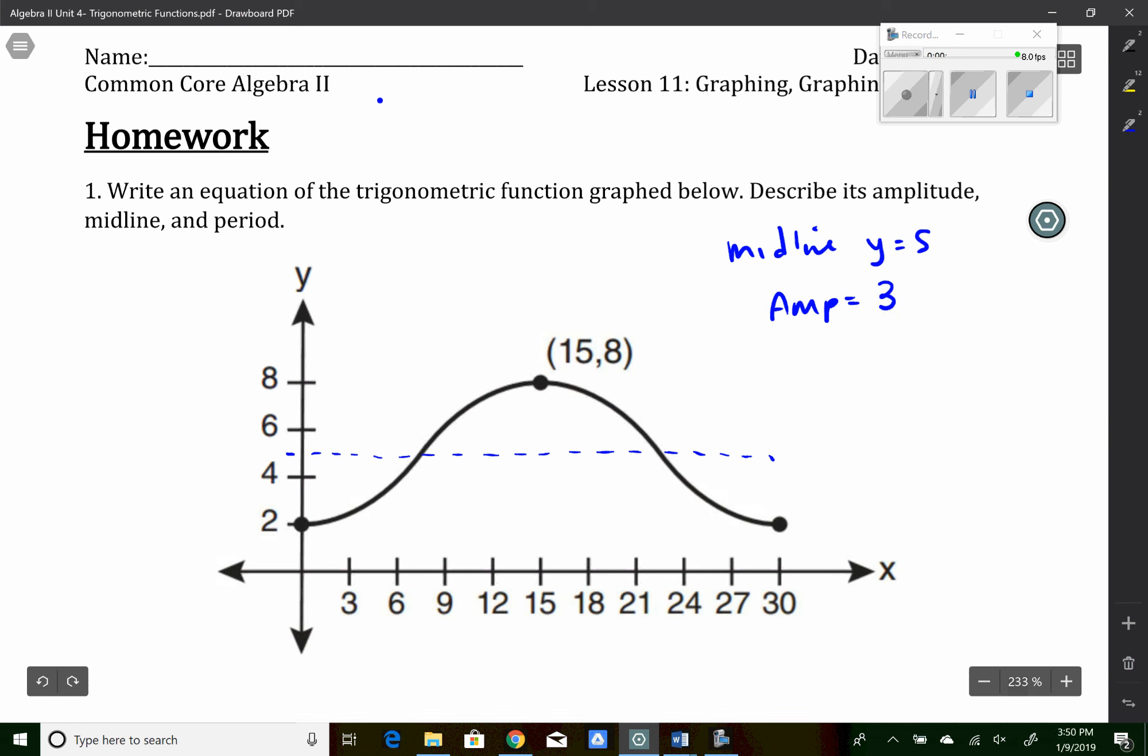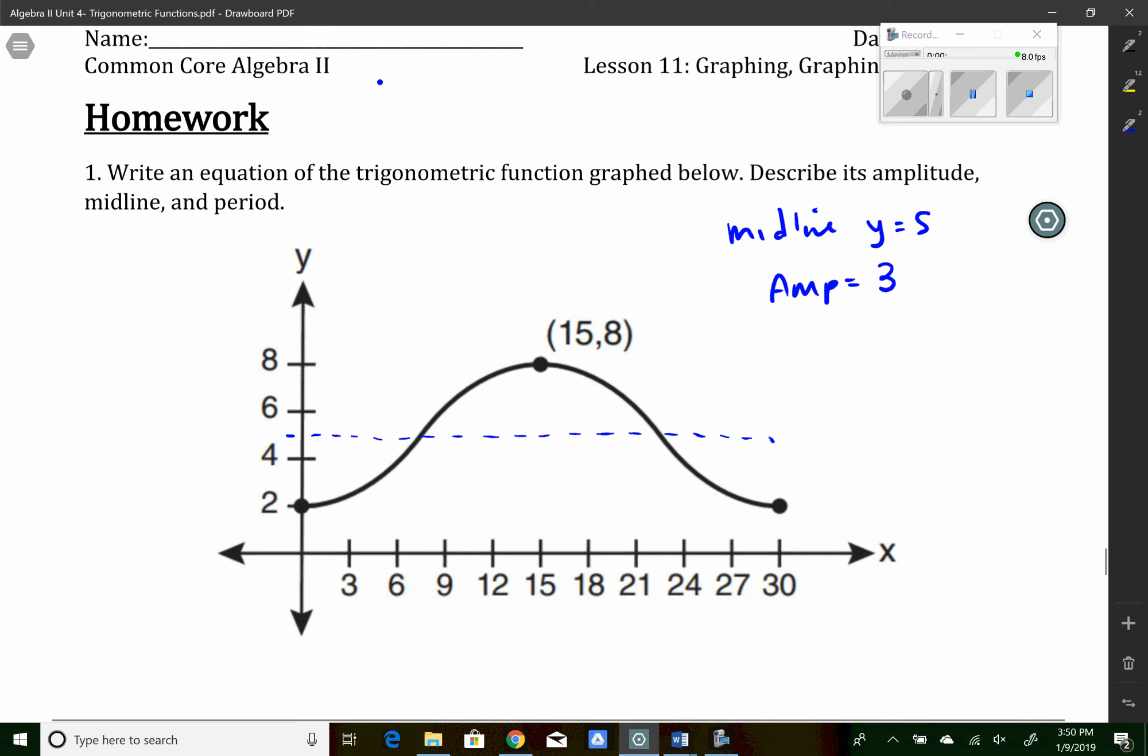And the period is how long it takes to complete a full cycle. So I see in this graph a complete cycle of the cosine curve. I start at the minimum, I go to the maximum, that's half of a cycle, and I go back down to the minimum here, so that's a full cycle. So the period is 30.